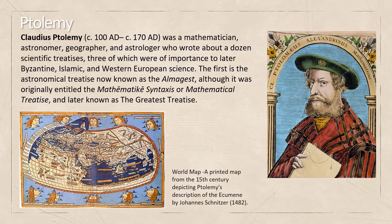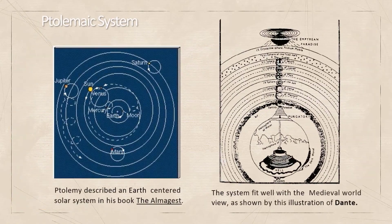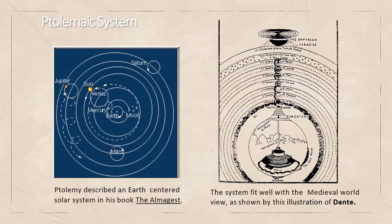Ptolemy was a mathematician, astronomer, geographer, and astrologer who wrote about a dozen scientific treatises, three of which were of importance to later Byzantine, Islamic, and Western European science. The first is the Astronomical Treatise, now known as the Almagest. Ptolemy described an Earth-centred solar system in the book The Almagest. This theory is also illustrated in Dante's Divine Comedy.